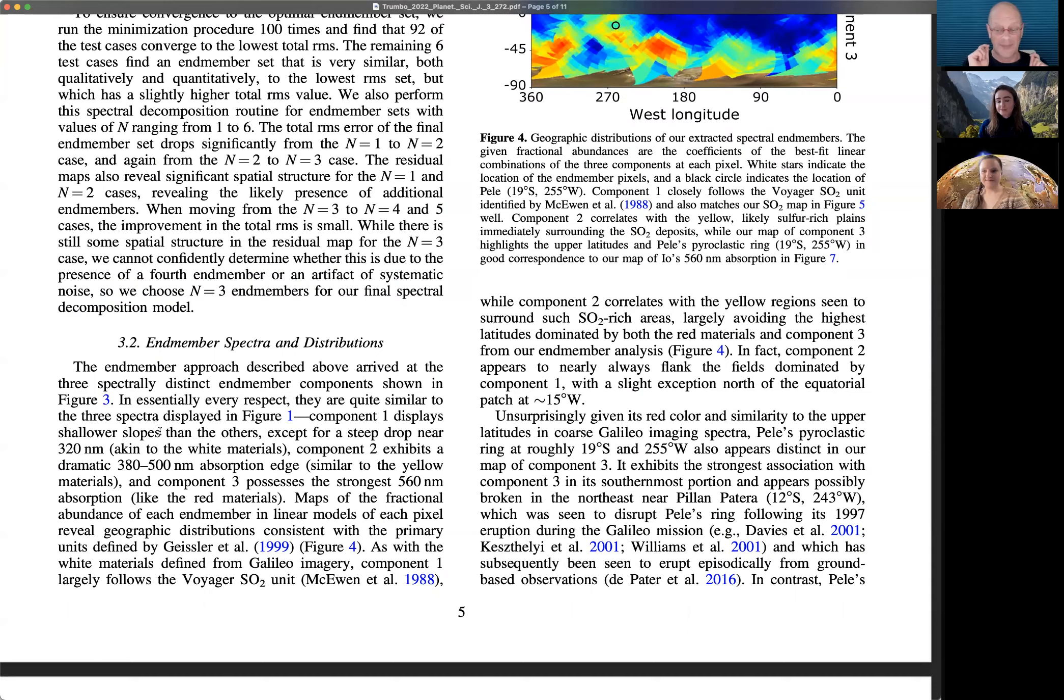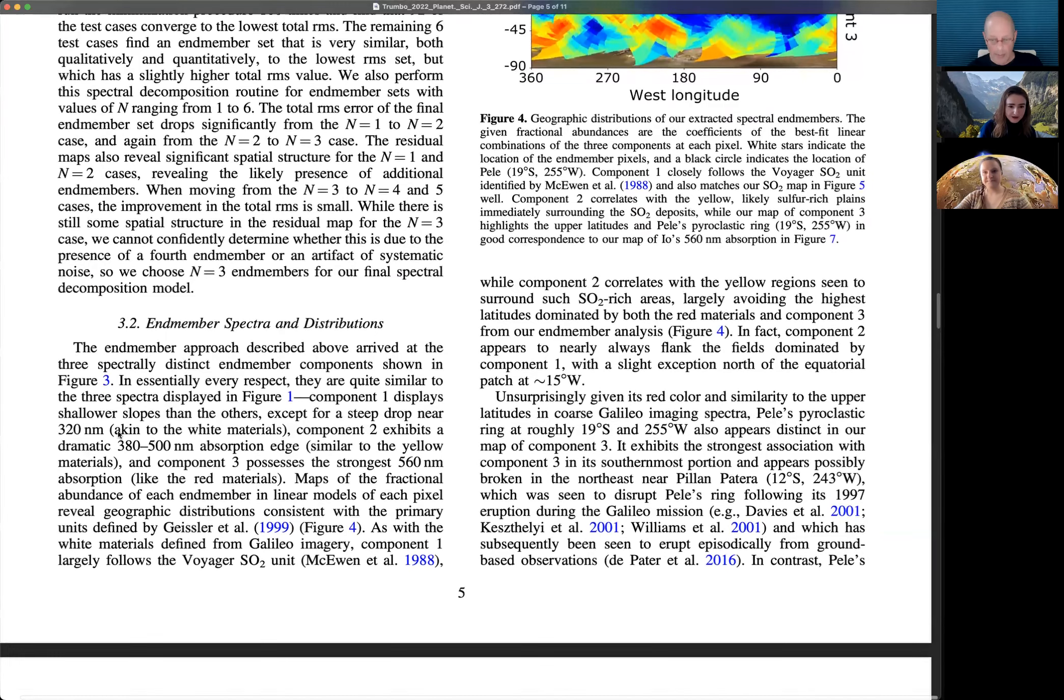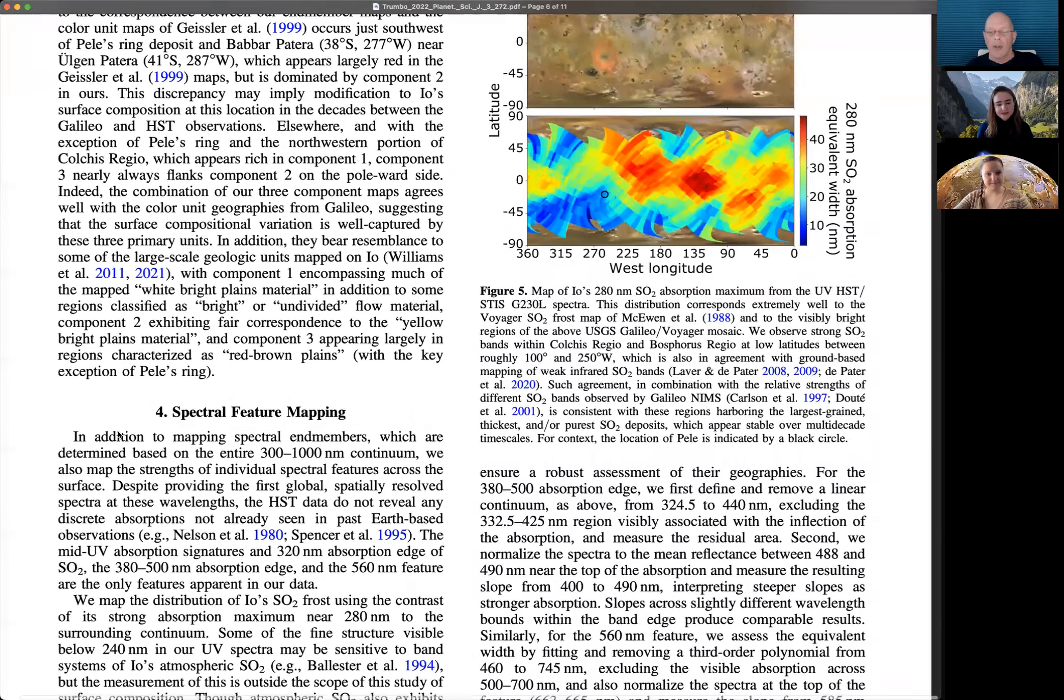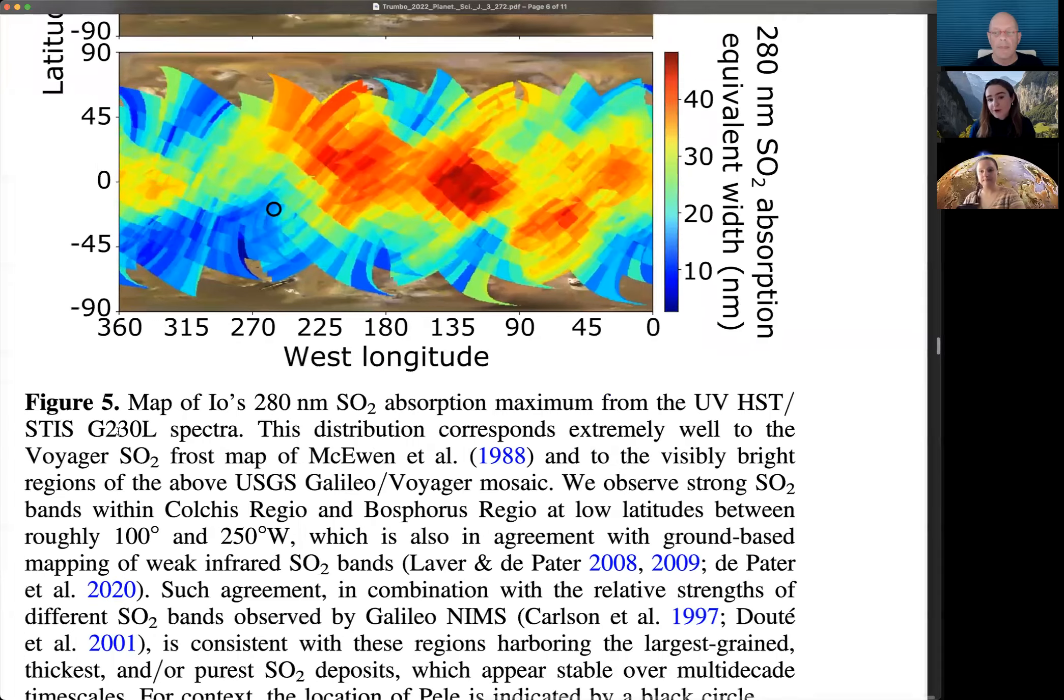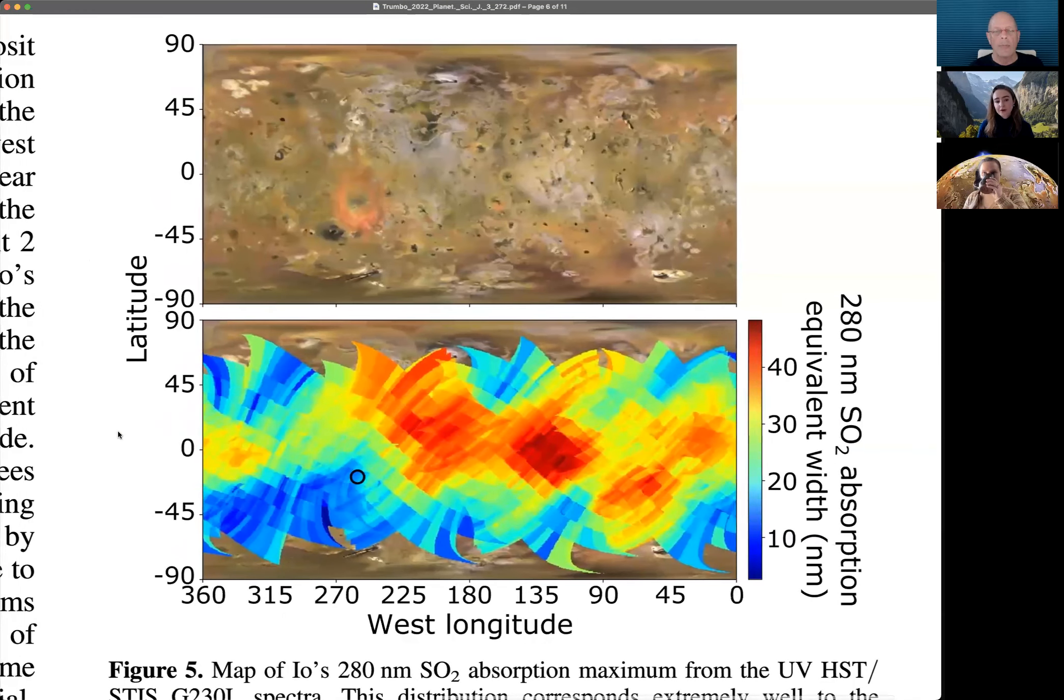We see them to varying degrees and we can map them across the surface and associate them with individual geologic terrains and specific surface processes, but there's no undiscovered feature that we've newly revealed for the first time, which is interesting, I think, in its own right. What we do is we look at the spectral features that we do see and that have been investigated to a degree from full disc spectroscopy from the ground. Those are the UV absorption features from figure one, which are indicative of SO2, that overall big drop in reflectance starting at about 500 nanometers, which is very strongly associated with the yellow materials, but is also seen in the red materials and even to a degree in the white materials.